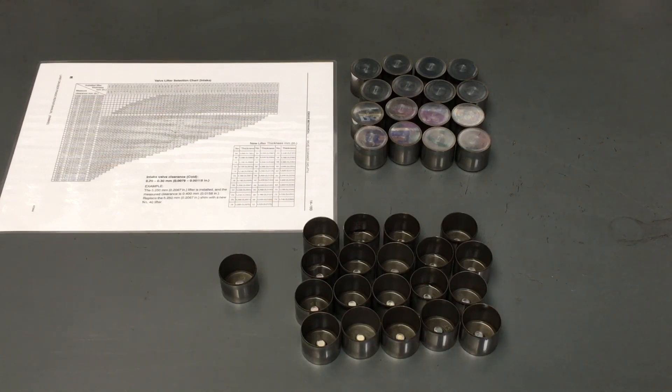Some have got shims, some have got adjusting screws, some you've got to replace the buckets and other systems, some hydraulic, whatever. So this is the 1KD FTV, you've got to replace what they're called valve lifters. Some people call them buckets, whatever.